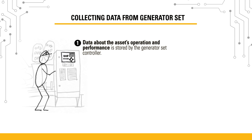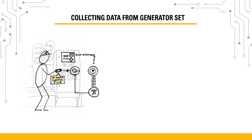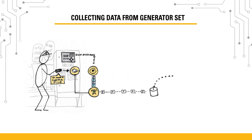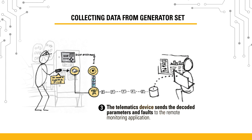Each controller might speak a different language. To overcome this barrier, a configuration file is plugged into the telematics hardware on the equipment. The config file uses code protocols to translate the controller's data into parameters, like engine oil pressure, and faults, like emergency stop. The parameters and faults are expressed in a language that the user's remote monitoring application can understand.